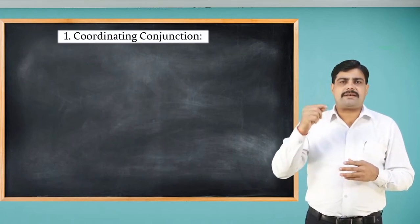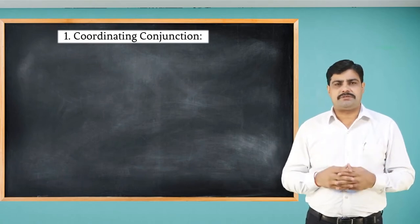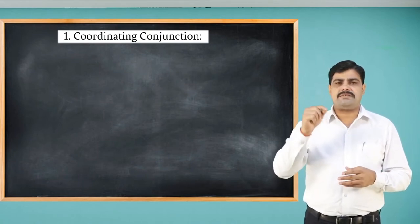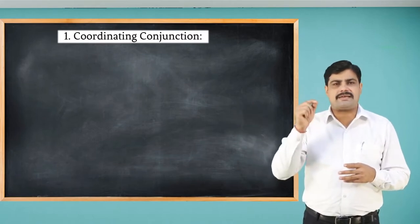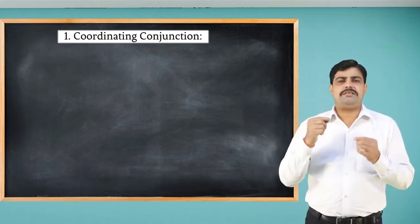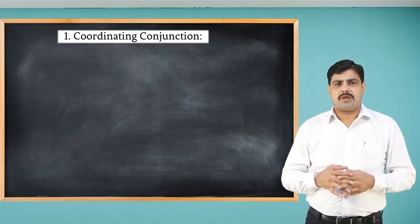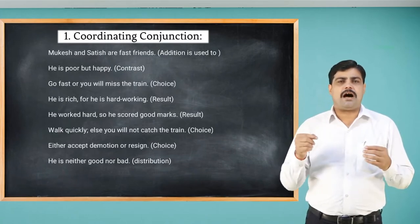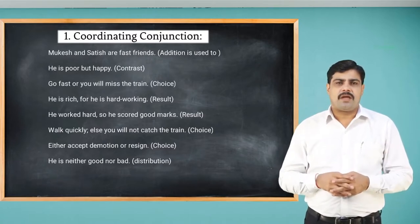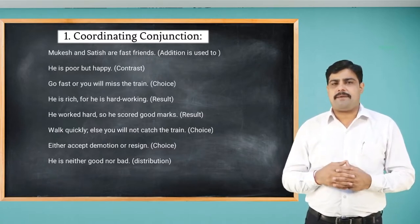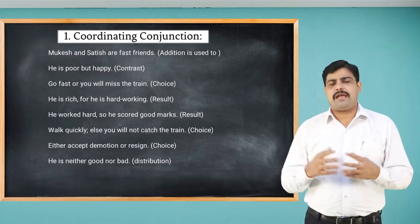Now let's analyze conjunctions and the situations in which they are used. Here are some sentences on the screen: 'Mohan and cities are fast friends.' 'He is poor but happy.' 'Go fast or you will miss the train.'